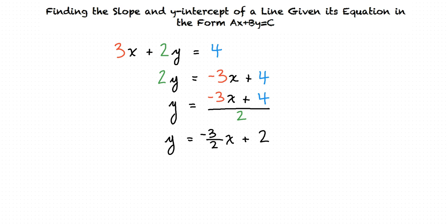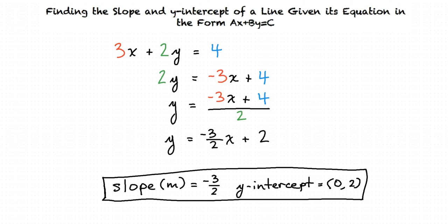I see that the equation is now in slope-intercept form. Does that mean that the slope is negative 3 halves and that the y-intercept is (0, 2)? Yes it does, because the slope is the coefficient of x, or m, and the y-intercept is the b in y equals mx plus b.